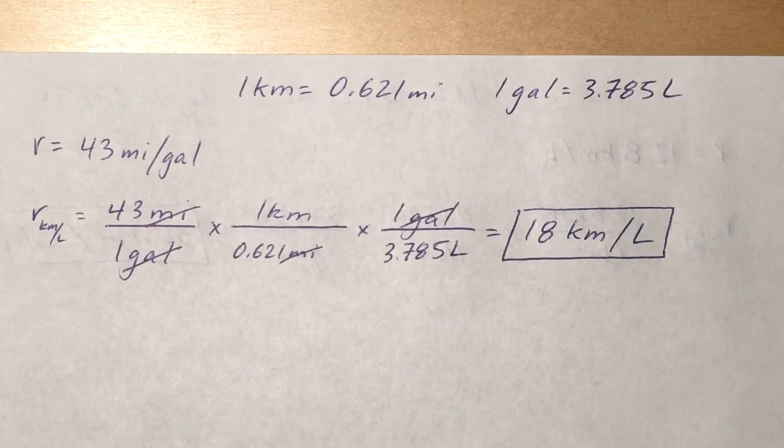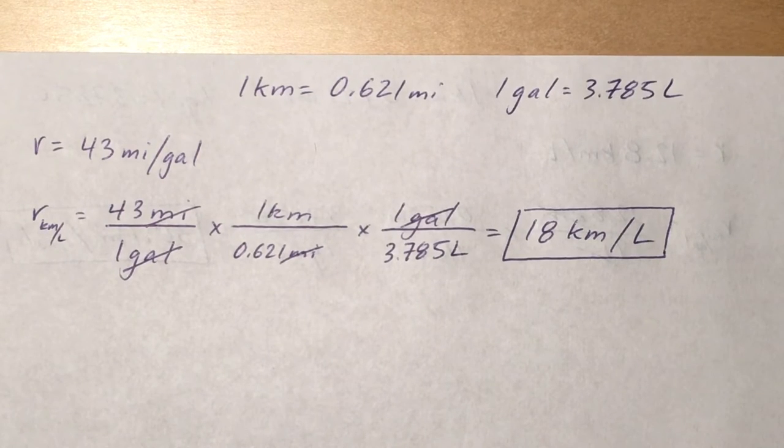That will give you units overall of kilometers per liter. Then you just do the math problem: 43 divided by 0.621, and then divide that answer by 3.785, and you should get 18 kilometers per liter.